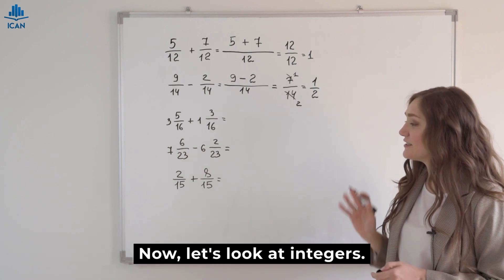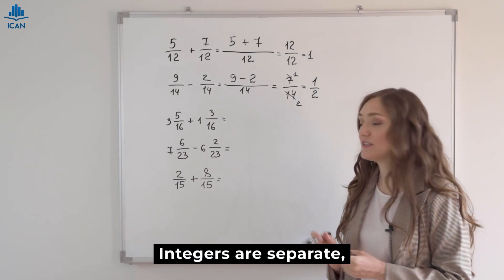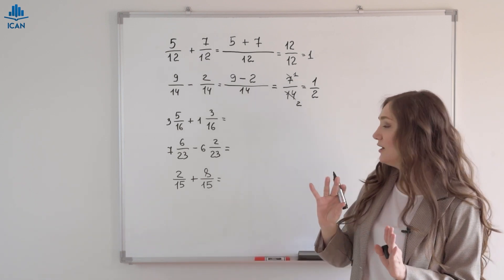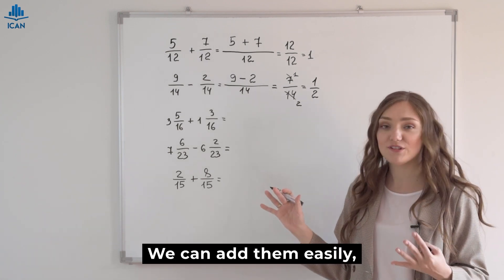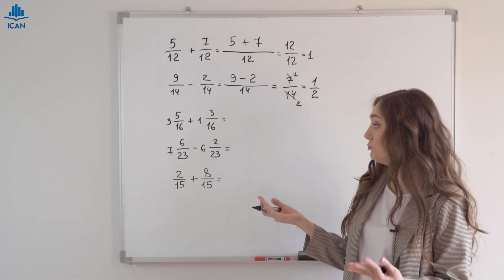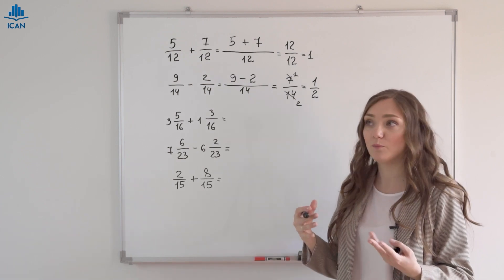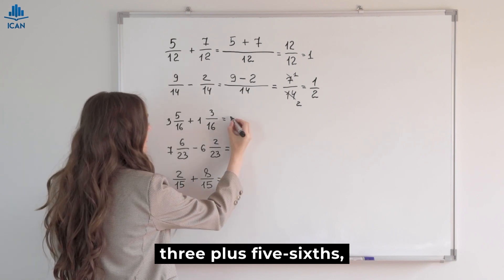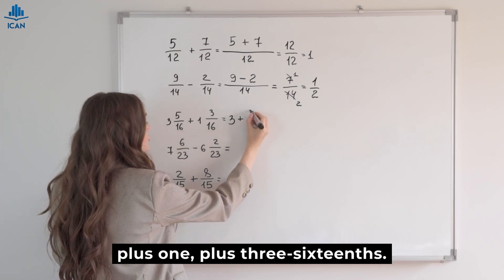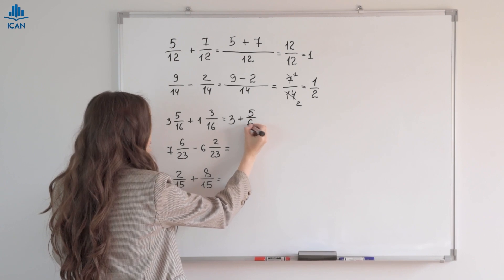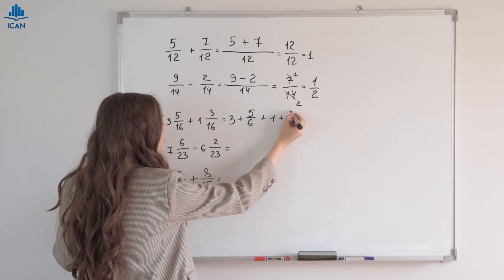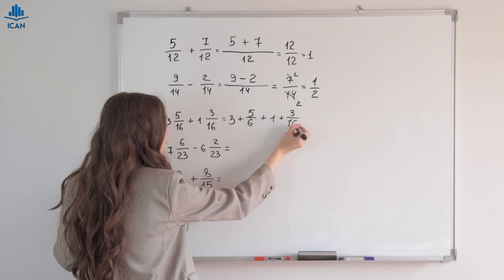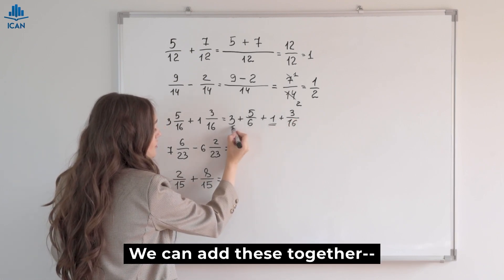Now let's look at integers. Integers are separate, so to speak. We can add them easily, one by one. It's like this fraction. 3 plus 5 sixths, plus 1, plus 3 sixteenths.